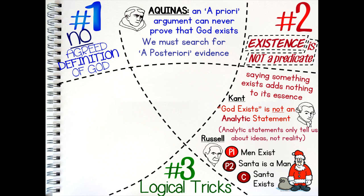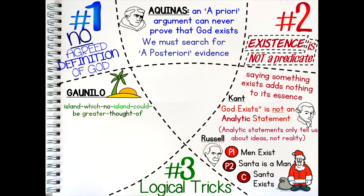Thirdly, the argument has been criticised for using logical tricks to try to define something into existence. The French monk Gaunilo of Marmoutier, a contemporary of Anselm, said that if Anselm's argument truly worked, it could be used on pretty much anything. If, for example, we said that there is an island which no island could be greater thought of, according to Anselm's logic such an island would have to exist. But this is plainly absurd, so Gaunilo believed Anselm's argument was false.